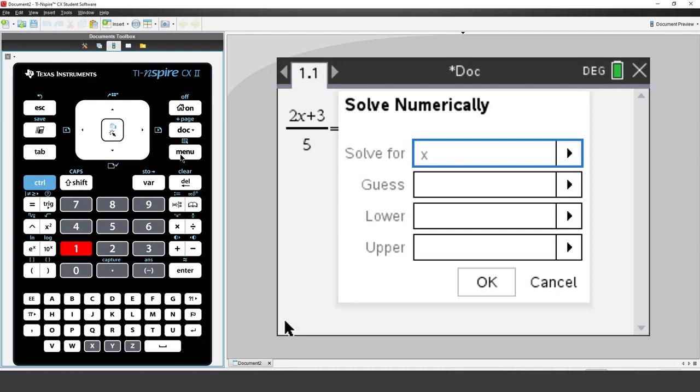TI Nspire automatically identifies the variable in our equation and provides an opportunity to input a domain for the solution and/or a guess.